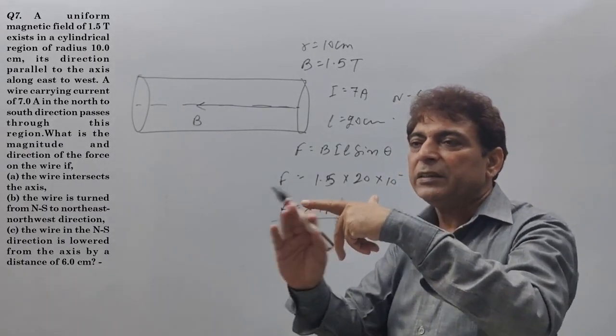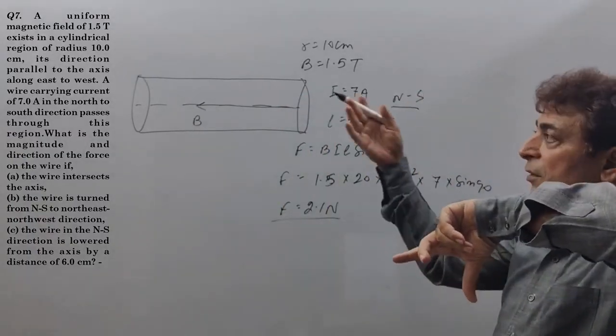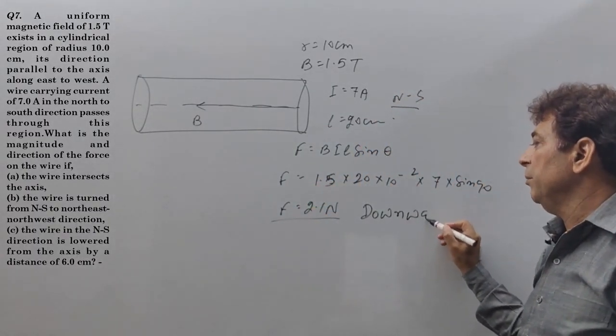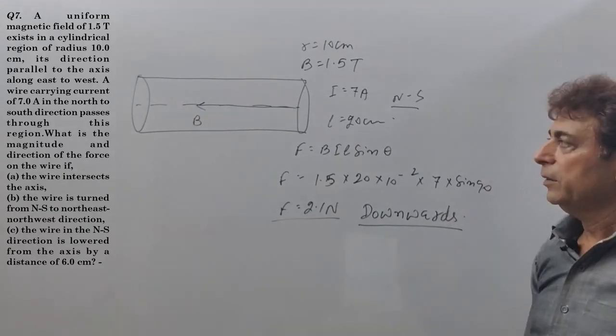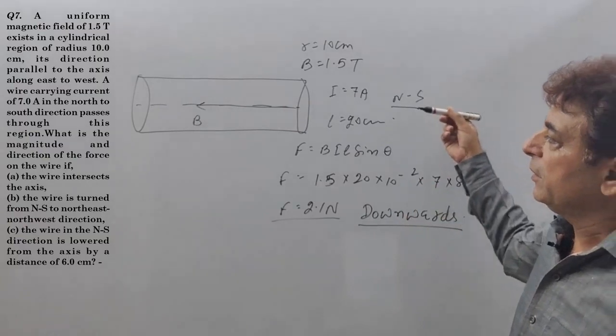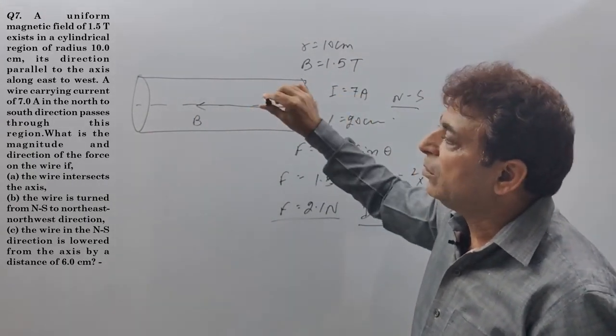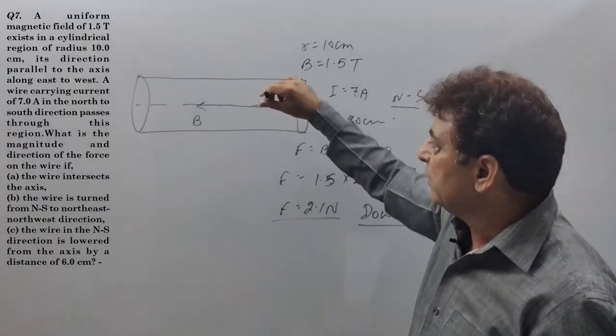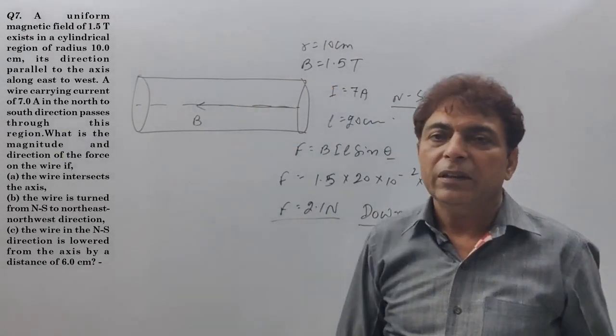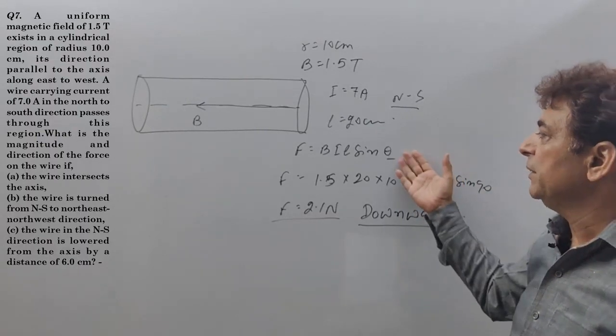The field is from east to west. And the current in the wire is from north to south. Something very important. Field this way from east to west, and a wire north-south in the direction passes through this cylinder, intersecting exists. Obviously the angle is 90 degrees. And the length of the wire in the cylinder to cross, obviously the diameter of the wire is 20 cm. The force acting on the wire is BIL sin theta. Theta is 90.